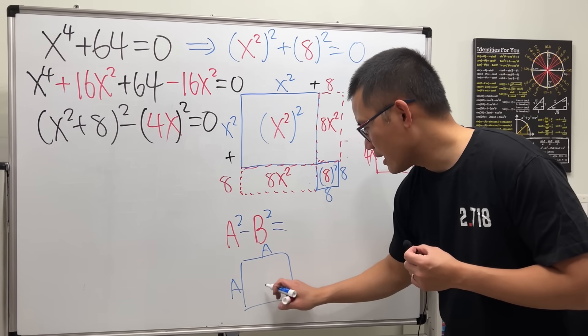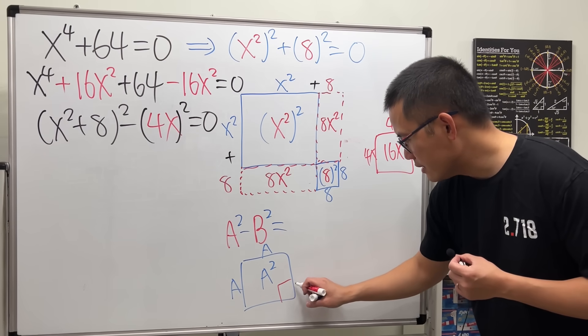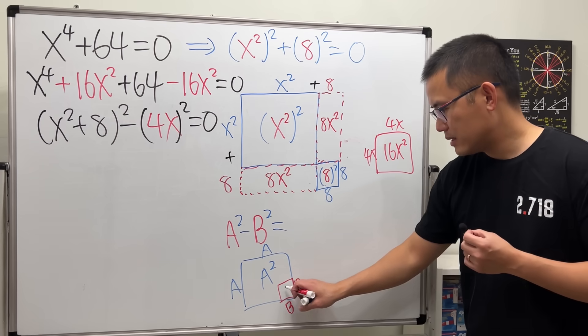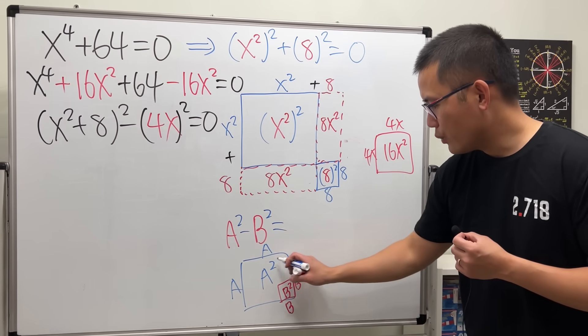Let's say we have a big square, a and a. That gives us the a squared. And then this time, we have to take away a small square like this. b and b here. So, we are taking away b squared.